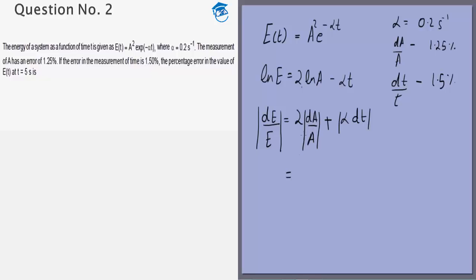So this is dE by E is 2 times 1.25 percent plus alpha is 0.2 times dT. Now dT by t is 1.5 percent and we are given that t is 5 seconds. So dT will be 1.5 percent of 5 seconds.